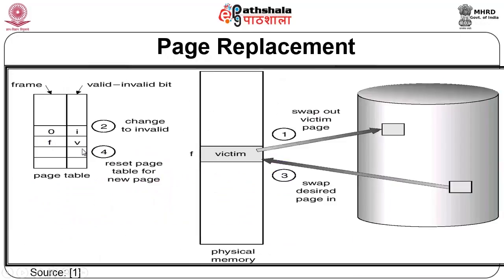A diagram illustrates what happens during page replacement: the victim page in frame F is swapped out, the desired page is swapped into that frame, and the valid-invalid bits in the page table are updated accordingly.